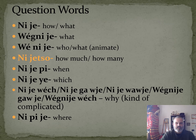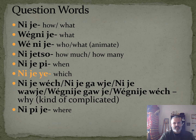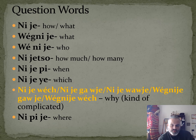Nije tso means 'how much' or 'how many.' There's occasionally a little bit of a dialect difference — you might hear nije et so or nije at so — but nije tso means 'how much' or 'how many.' Nije p means 'when.' Nije yay means 'which.'